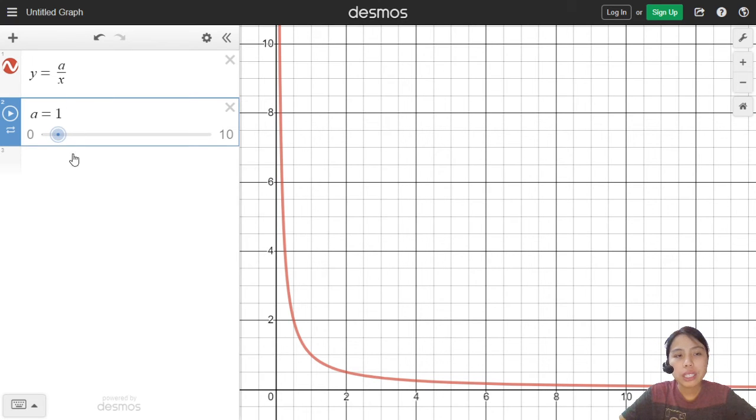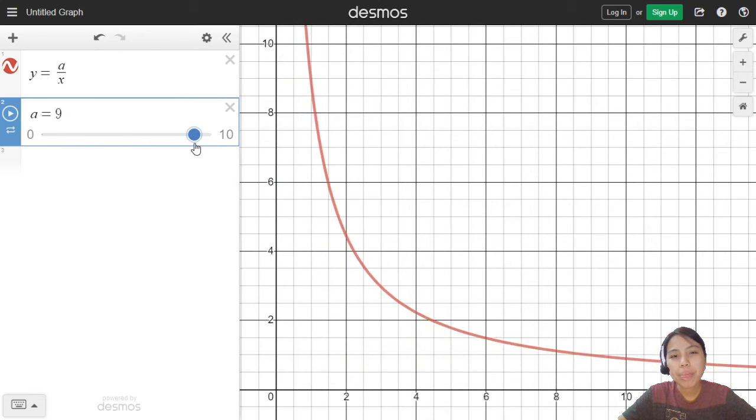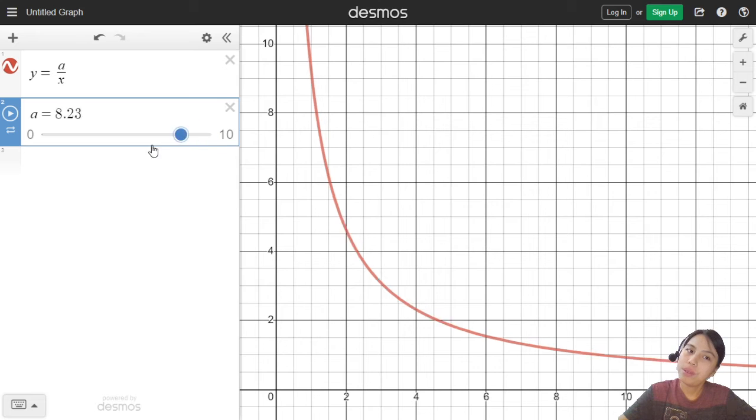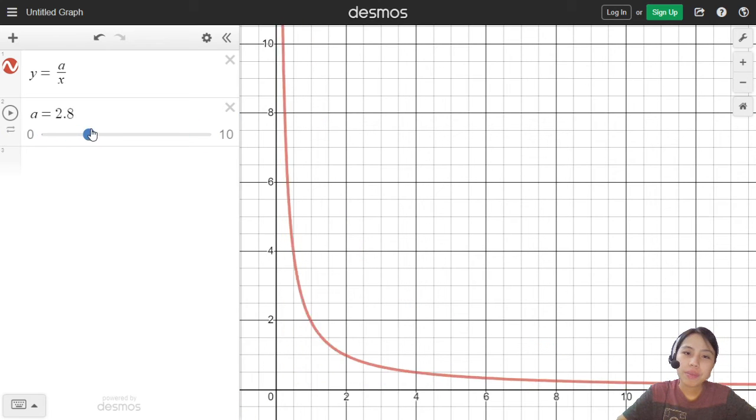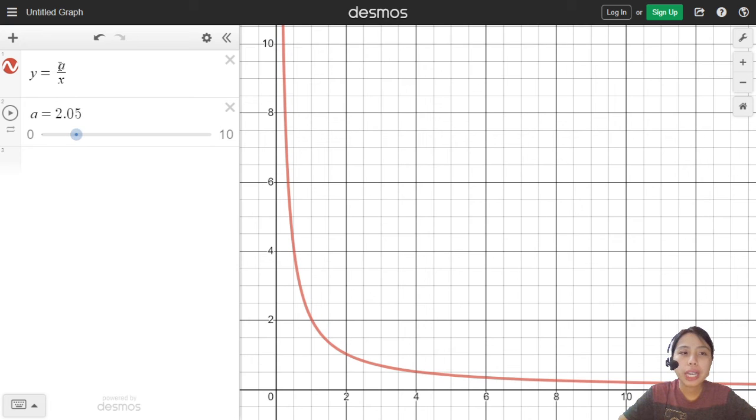So you see, what happens when I change this 1 over x? Because a is 1. If I go 2 over x, notice what happens to the curve. It goes up. So that means this is how reciprocal graphs change when you change the constant which is on top of the x. The numerator.